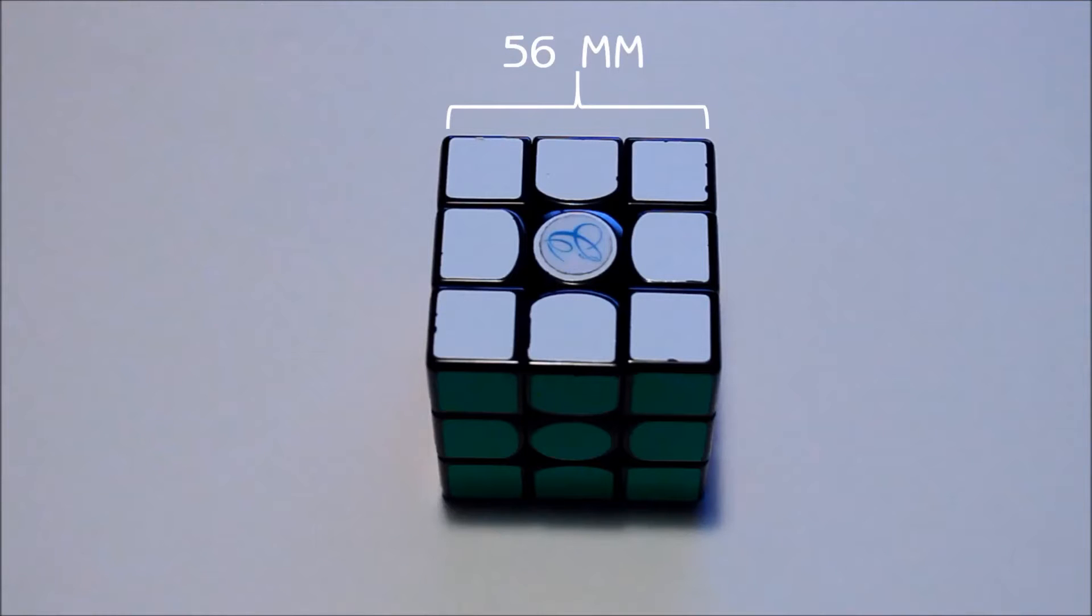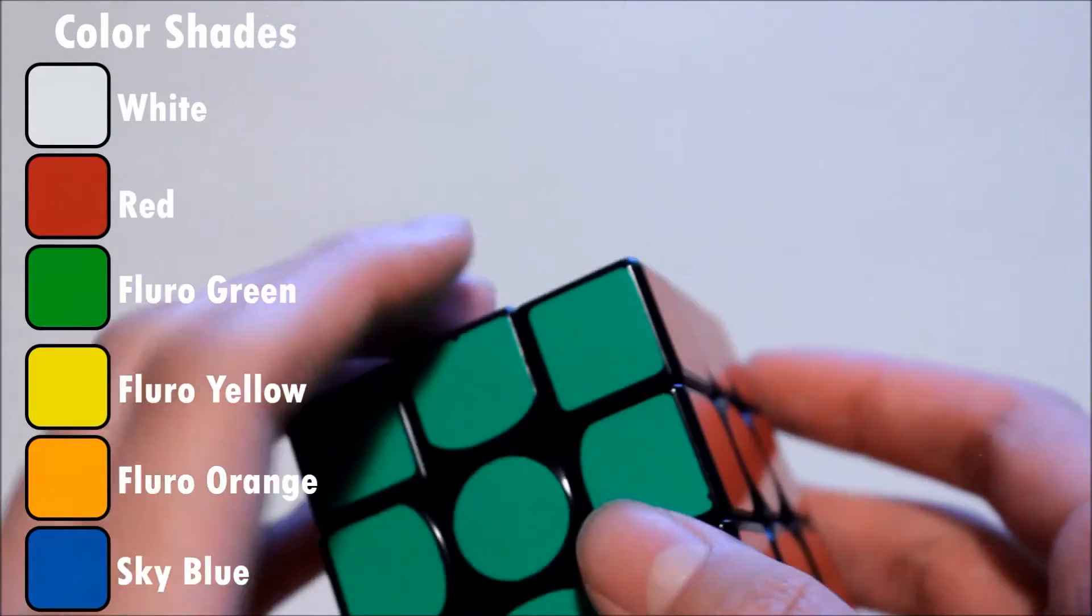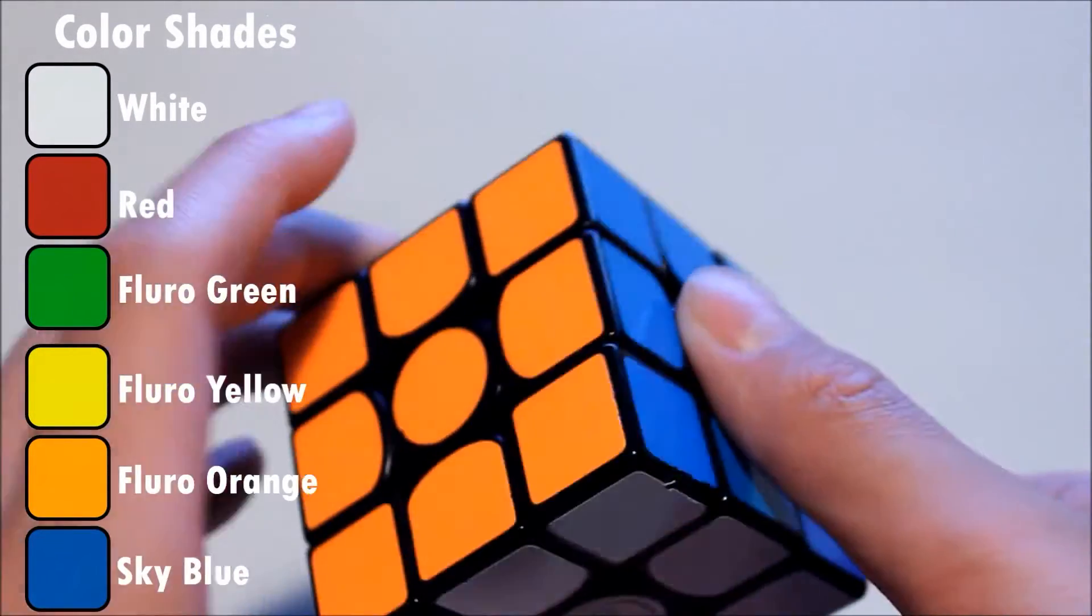The cube is 56mm, which is a bit smaller than the 57mm that I'm used to. The stickers are replaced by the cubicle with the custom shades. These are the shades I use.